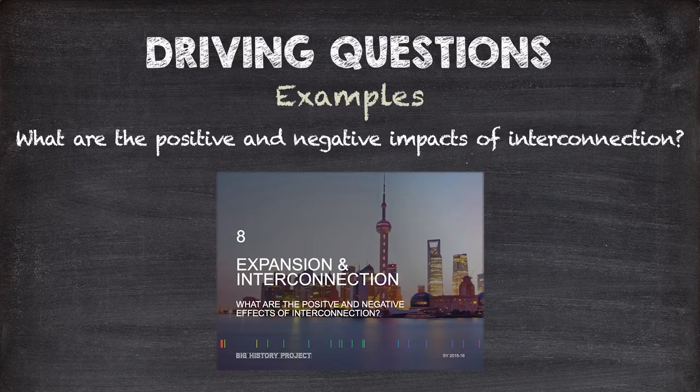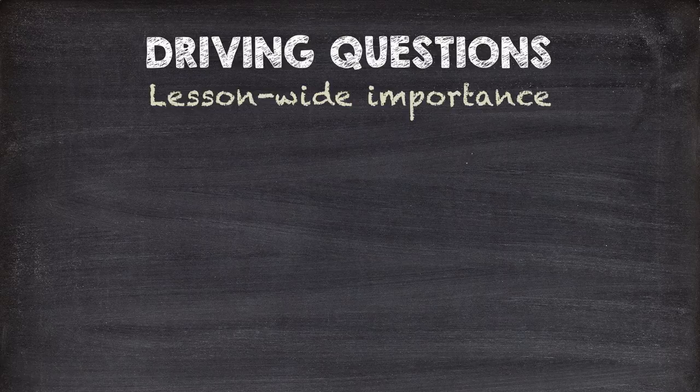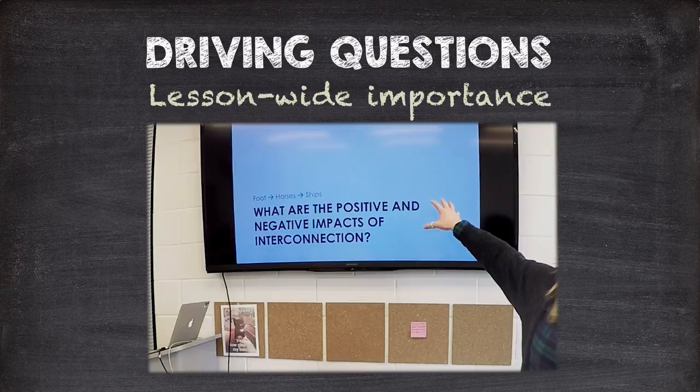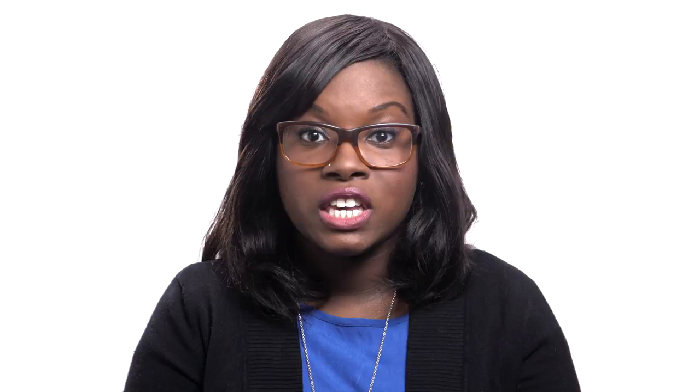Each lesson offers new ways for students to grapple with and explore these big questions. Teachers of Big History often take the driving question, or DQ, and put it on the wall in great big letters, keeping it front and center — an important reminder that all historical and scientific investigations start with wonder and curiosity. At the beginning of each unit, we have kids do a driving question notebook activity. The DQ notebook is like a journal.